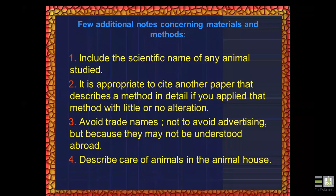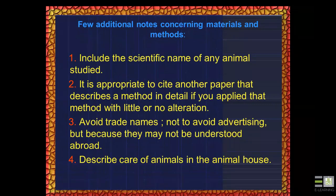In the materials and methods, specify exactly what you worked on — for example, rats or rabbits — and be precise. If you are using a previously published method with little or no alteration, cite that paper rather than describing the full method in detail. If you used the method with modification, state that it is a modification of the published procedure.